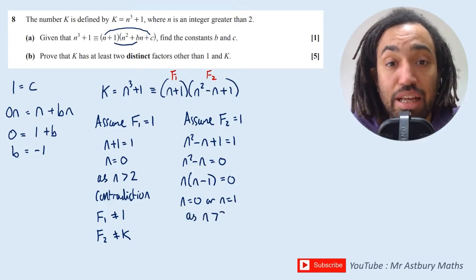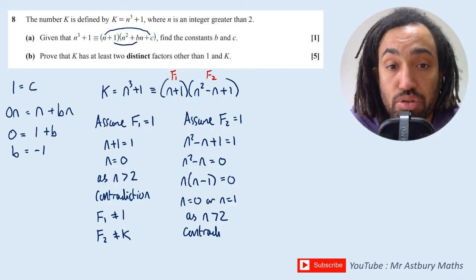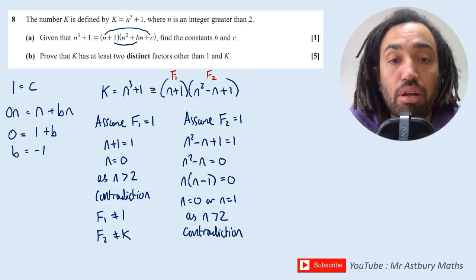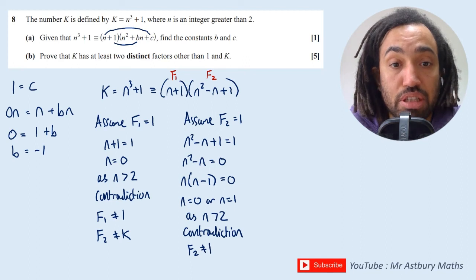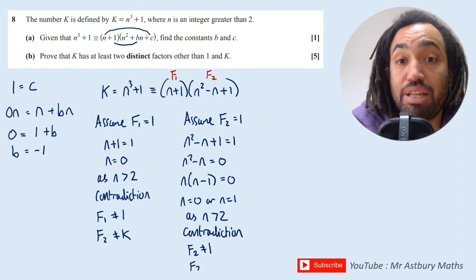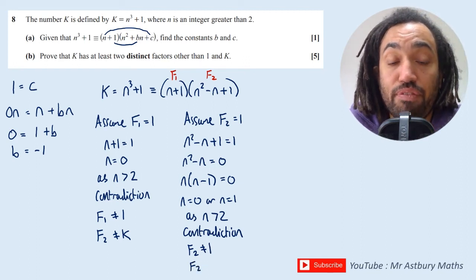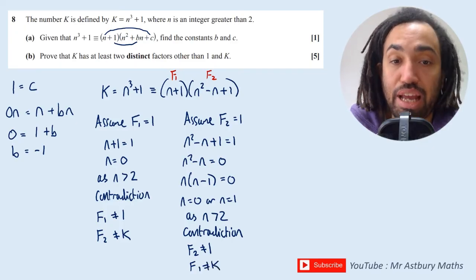Again, as n is greater than 2, this is a contradiction, which means that F₂ doesn't equal 1, which means that by the same logic F₁ doesn't equal k.